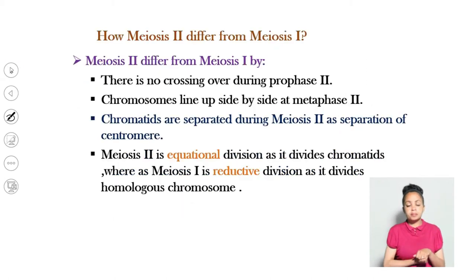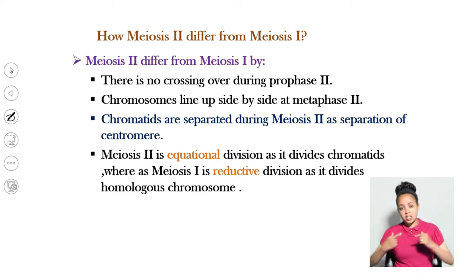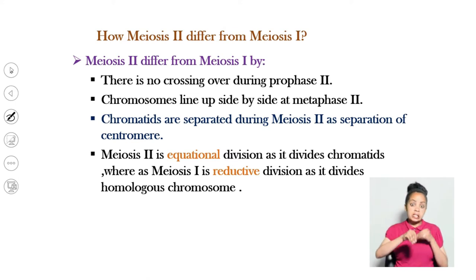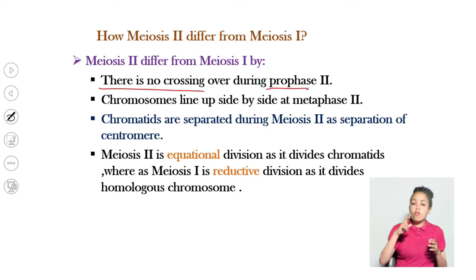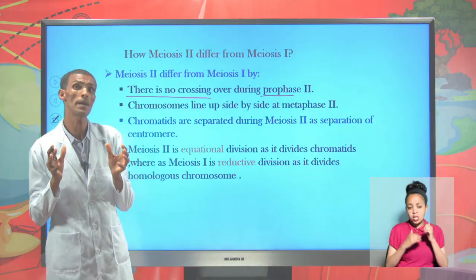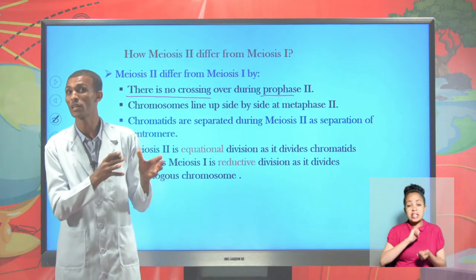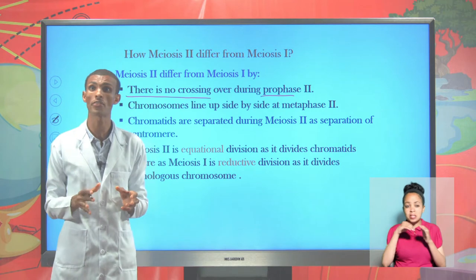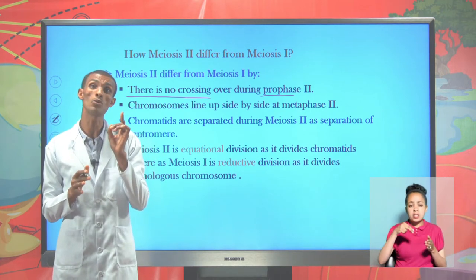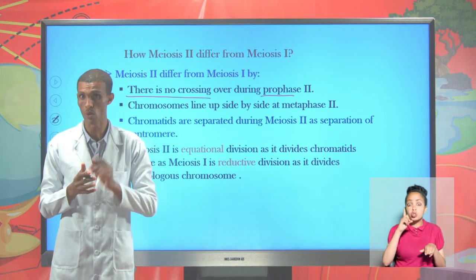Meiosis II can be differentiated from meiosis I by the following main activity: there is no crossover during meiosis II. The only crossover, where homologous chromosomes exchange chromatin segments at chiasmata points, takes place only during meiosis I.